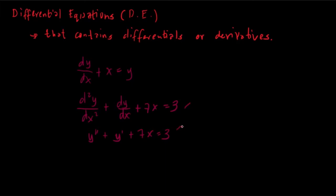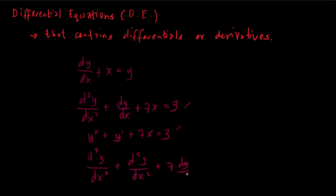These two are just the same — we're only using different notation, because y prime represents the derivative of y in terms of x. We can also have a combination with trigonometric functions: the third derivative of y in terms of x, plus the second derivative of y in terms of x, plus 7 dy/dx, plus sin x is equal to 0. These are all examples of differential equations.